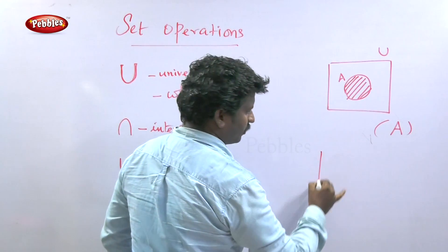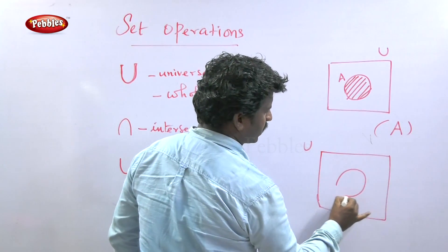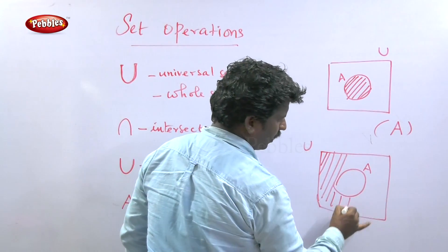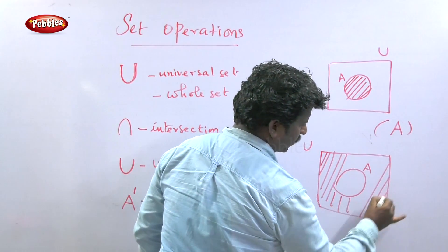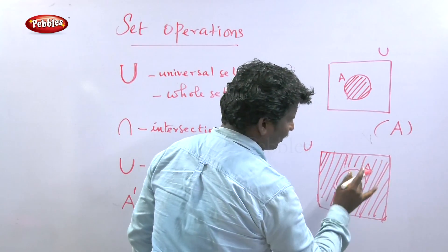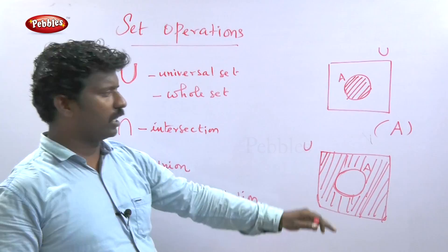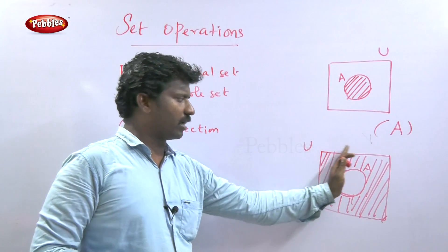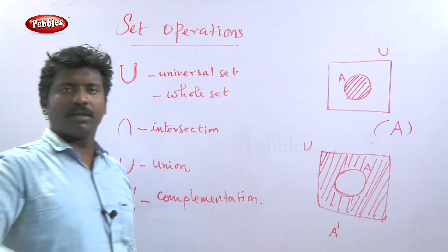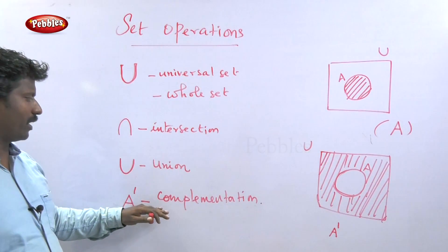This is the universal set, and this is set A. The elements other than A are the shared portion. This shared portion is A dash, which is the complementation of A.